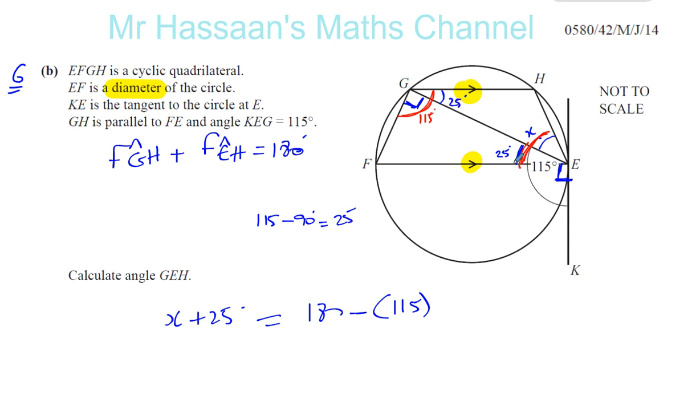So I can say X plus 25 is equal to 180 minus 115. X plus 25 plus 115 gives you 180 because these two angles add up to 180. So X plus 25 is 180 minus this angle. So X plus 25 is equal to 180 minus 115, which is going to be 65. So X is equal to 40 degrees. X is equal to 65 minus 25, which is 40 degrees.